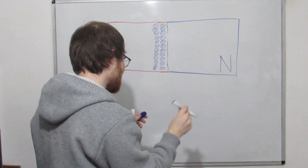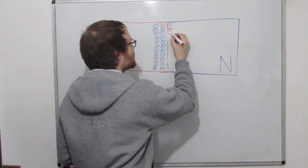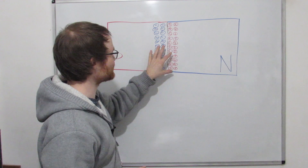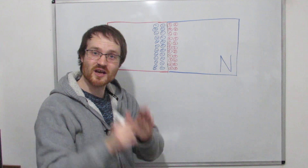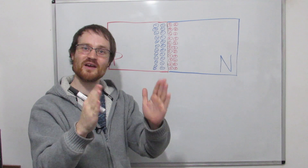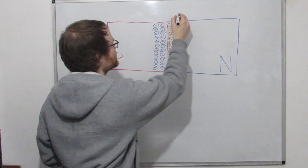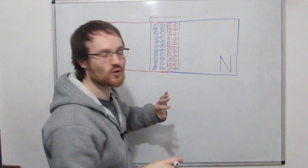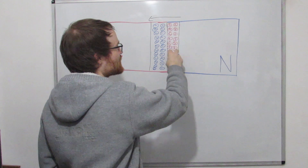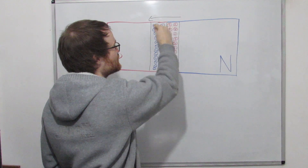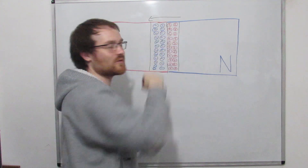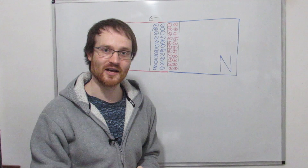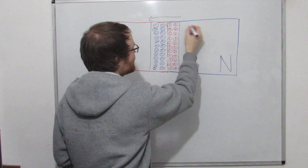They'll keep diffusing across layer by layer until a point where the region is too wide for more to get across. As this negative charge builds up on the P side, a positive charge builds up on the N side — those atoms have lost electrons and now have more protons than electrons. We see a voltage across this junction, and we've got this special region called the depletion region, because there are no more free holes or electrons in here — all the holes have been filled by these electrons.